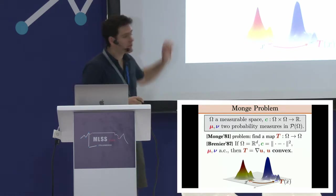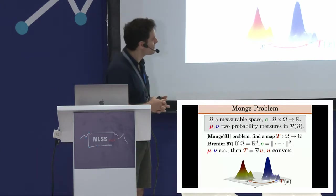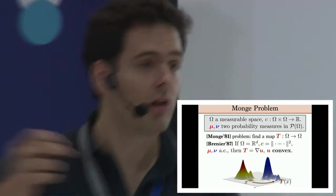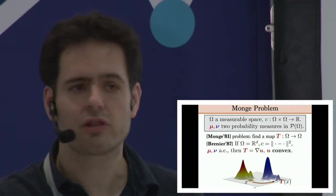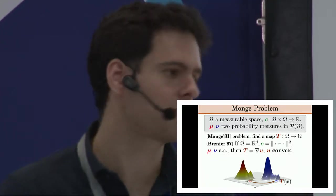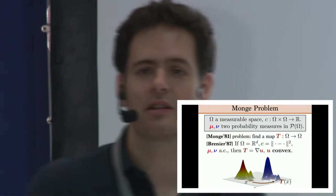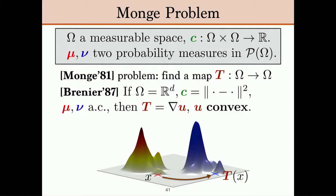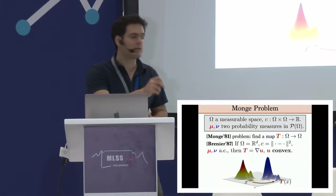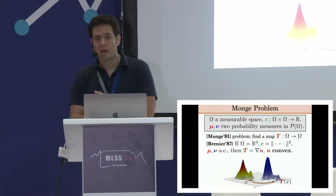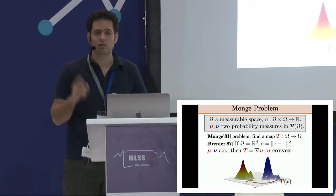Brenier proved the following: if the space is R^d and the cost is the squared Euclidean distance — unlike Monge who used distances, here it's the square of the distance, which we all use in machine learning — then if the two distributions are absolutely continuous with respect to Lebesgue measure (think of them as densities), there is always a map that optimally transports one density to the other, and it must be the gradient of a convex function.